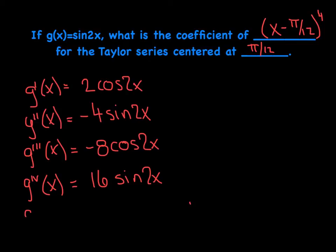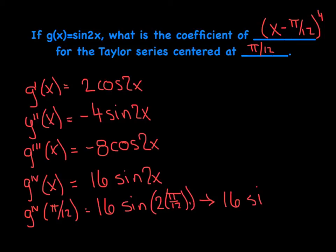Now what I really want to do is I want to evaluate the fourth derivative specifically at pi over 12. So here we go, sine of, now I've got to do 2 times that pi over 12. And what that's going to do is that's going to make this really a pi over 6, which is equivalent to 30 degrees, sine of 30 is a half, so 16 times a half would give me a value of 8. Now notice, 8's not going to be my final answer, is it?